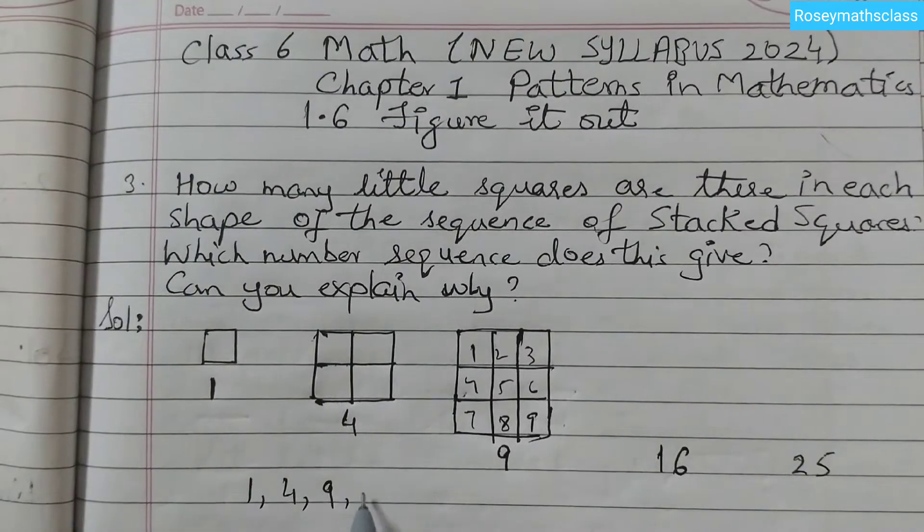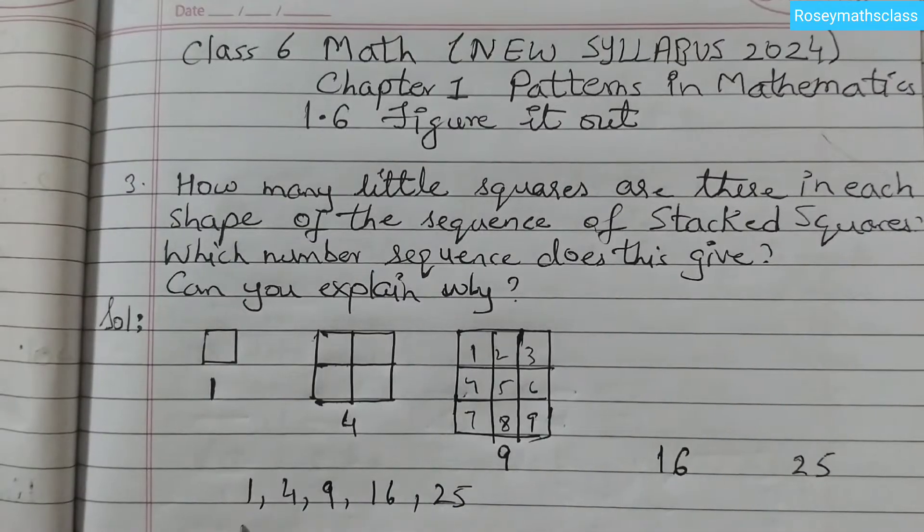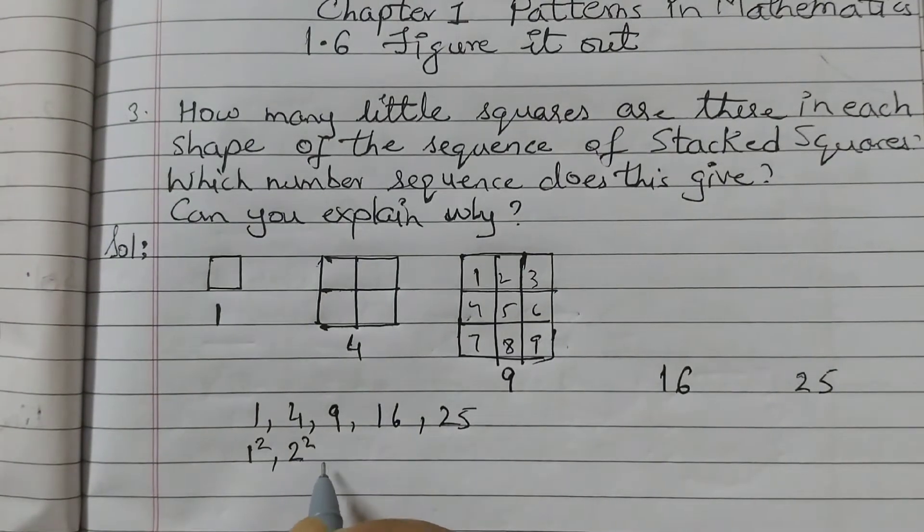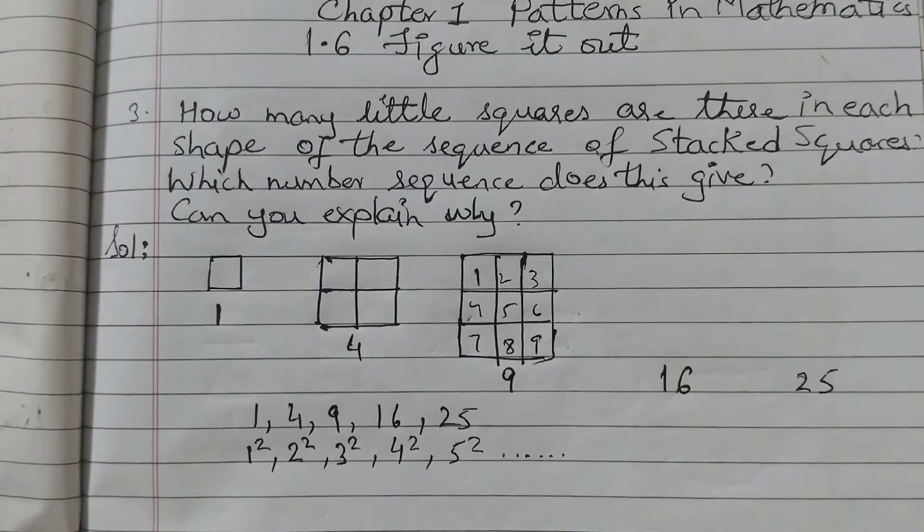1, 4, 9, 16, 25. Because these numbers can be written as 1 squared. 4 can be written as 2 squared. 2 into 2, 4. 9 can be written as 3 squared. 4 squared. 5 squared. So this sequence goes on like this.